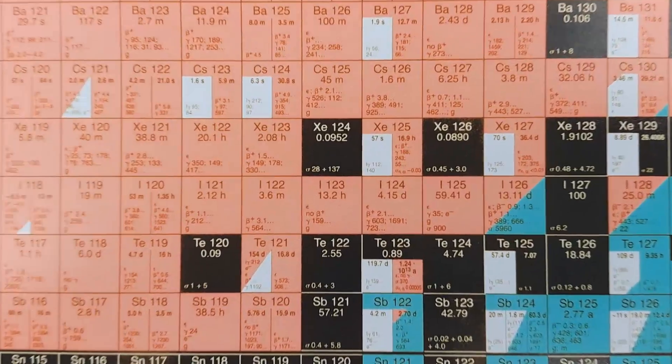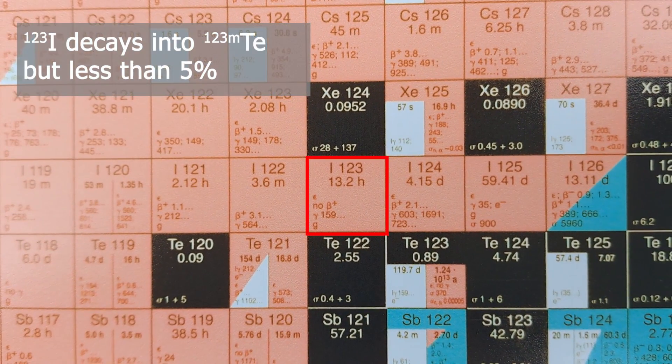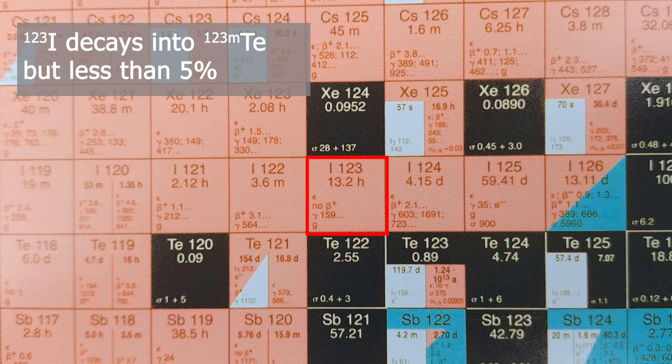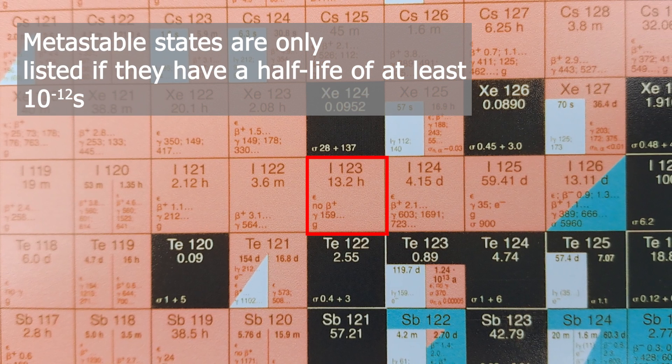After a radioactive decay, the daughter nucleus is usually in an excited state. But two criteria must be met for the label M to be listed in this tile. The decay must lead into a metastable state with a probability of more than 5%, and has to have a minimum half-life of about 10 to the power of minus 12 seconds.